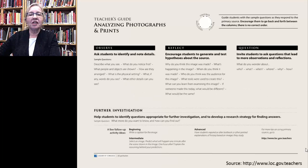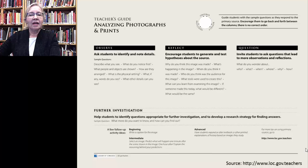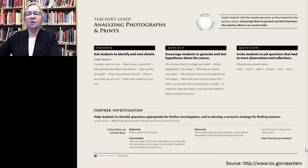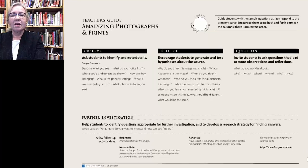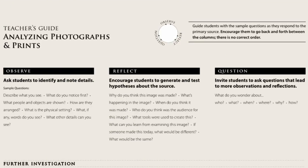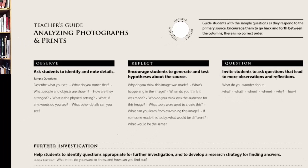One last strategy: this fourth one is the classic source analysis tool from the Library of Congress. This method looks at the work of art as a primary source — a piece of evidence in the form of a picture rather than written words that can be studied and analyzed. These questions were designed for photographs and prints, but apply well to works of art too. They're grouped under three headings: observe, reflect, and question.